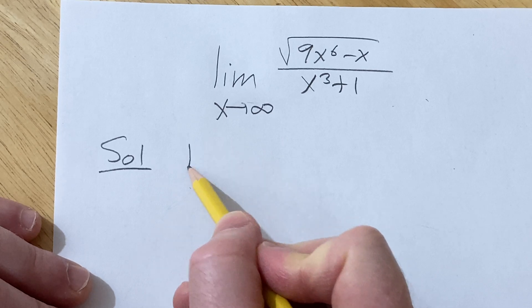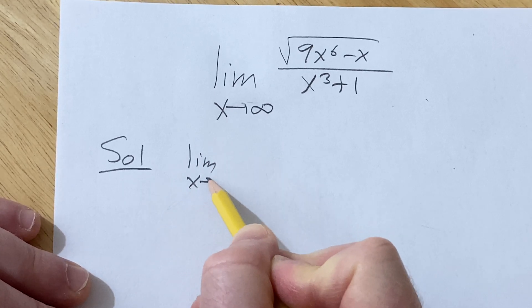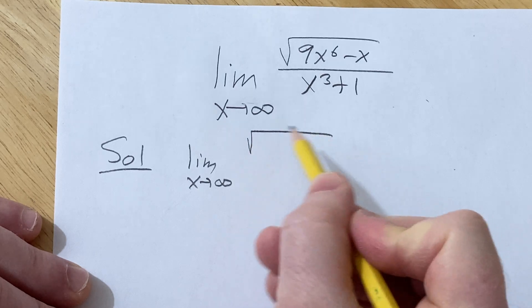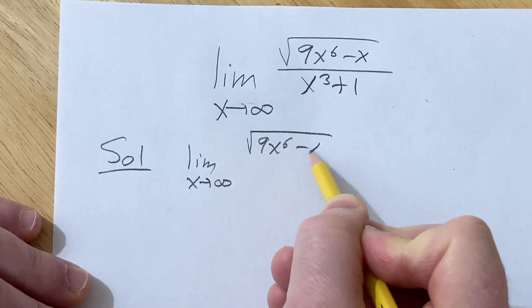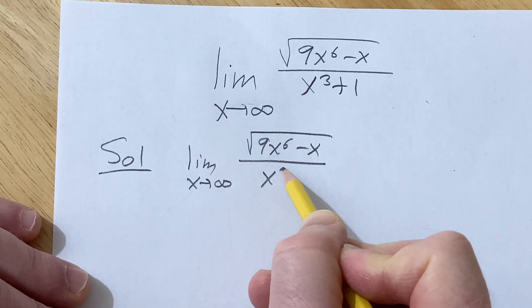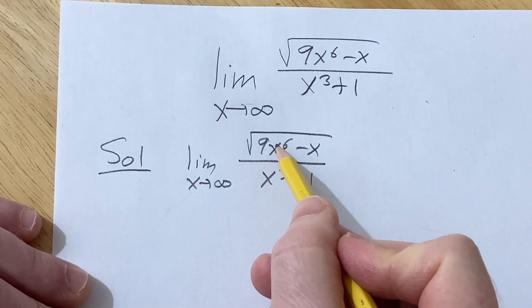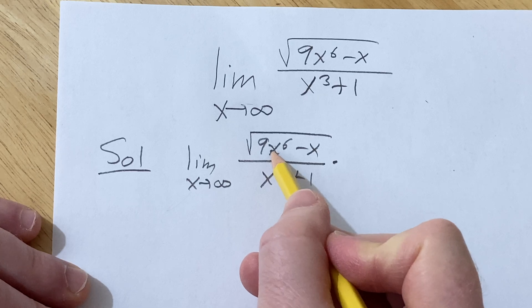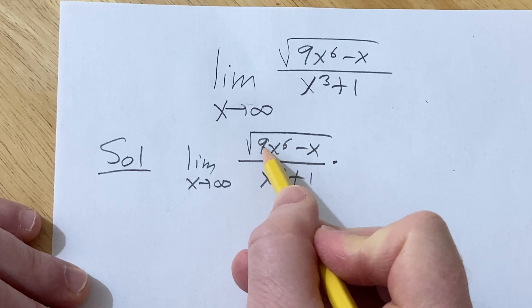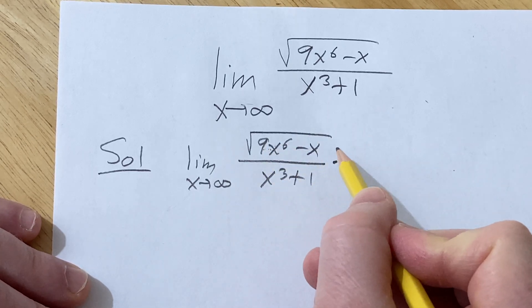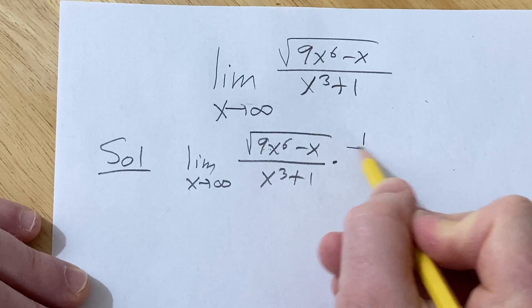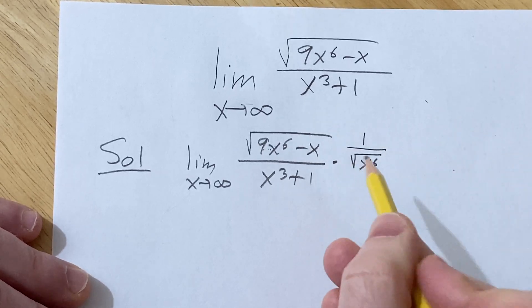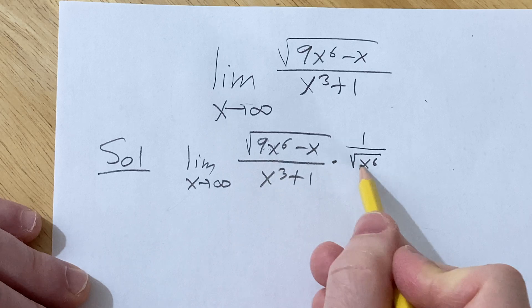The first thing we're going to do is basically multiply by 1 in a clever way. So this is √(9x⁶ - x) over (x³ + 1), and we want to clean this up. In order to clean up the square root, we need to multiply by something. I'm going to multiply by 1 over the square root of x⁶, because we want to combine this with this square root.